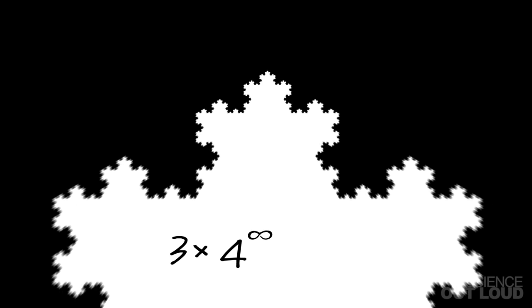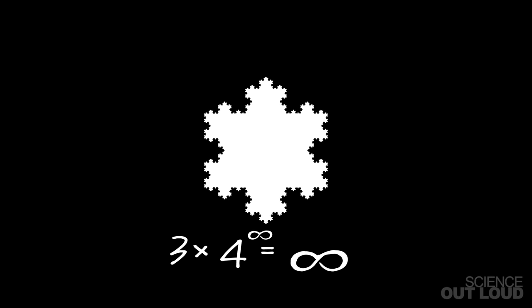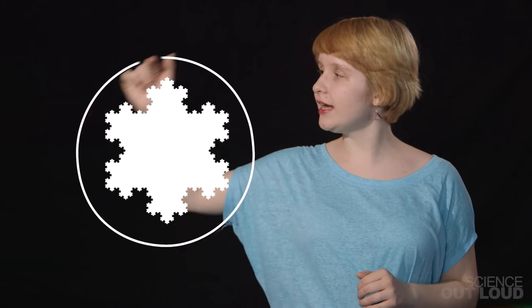If we do this an infinite number of times, we'll get infinitely many sides, so the perimeter of the Koch snowflake will be infinite. But the area of the Koch snowflake wouldn't be infinite. If I draw a circle with a finite area around the snowflake, it will fit completely inside, no matter how many times we increase the number of sides.